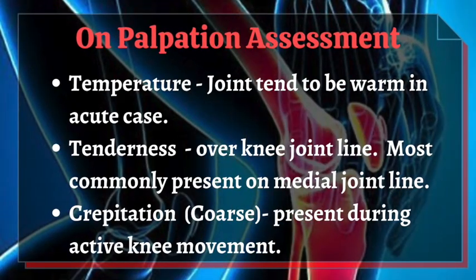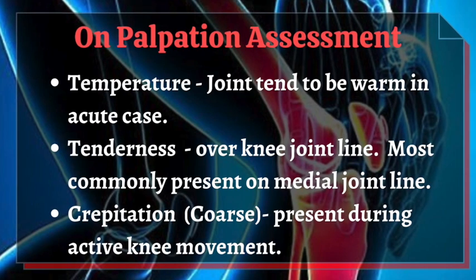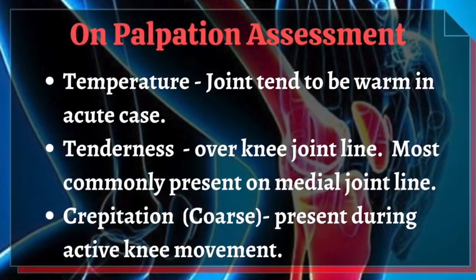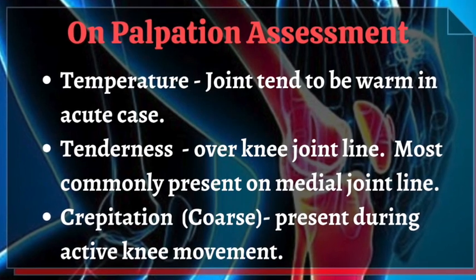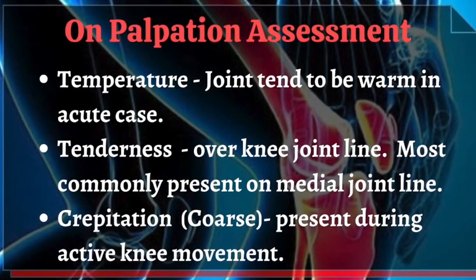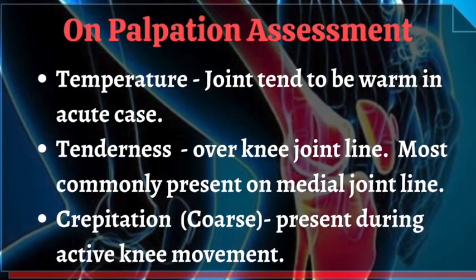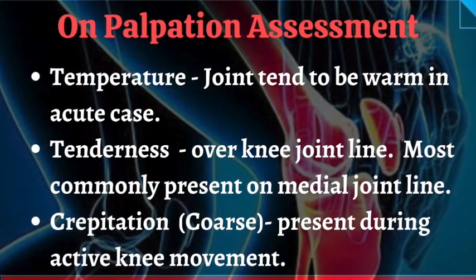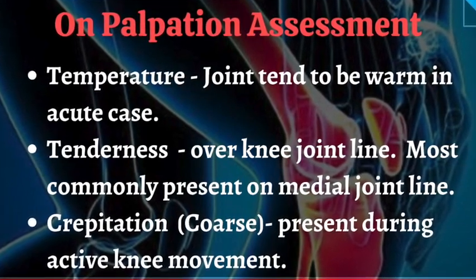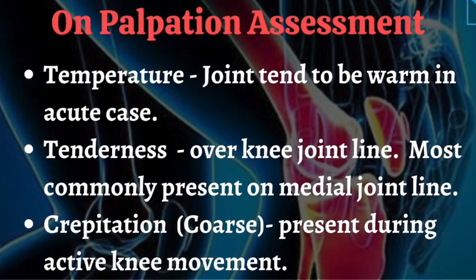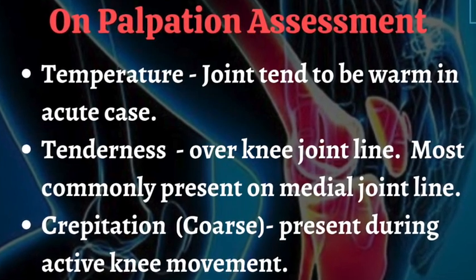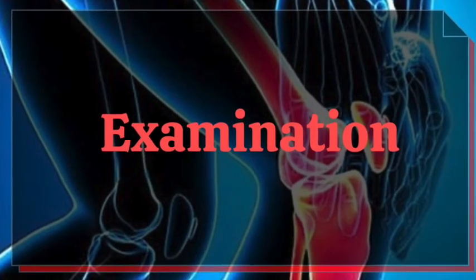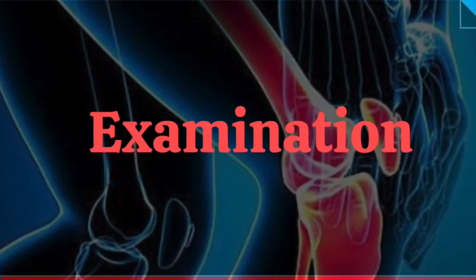Here in this figure you can see the swollen knee joint. Now comes the palpation part. In osteoarthritis, temperature of the knee joint tends to be warm in acute cases. Tenderness is present over the knee joint line, most commonly over the medial joint line. Coarse crepitations are present during active knee movement.